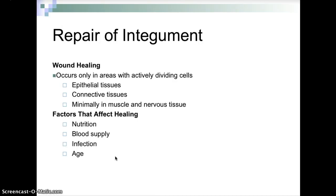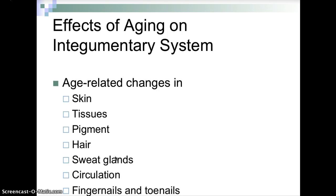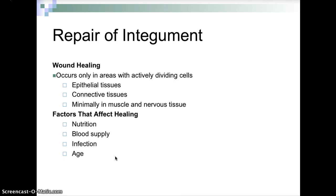Wound healing is the repair of the integument. It occurs only in areas with actively dividing cells, such as epithelial tissues, connective tissues, and minimally in muscles and nervous tissues. Factors that affect healing include nutrition, blood supply, infection, and age.